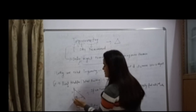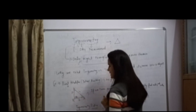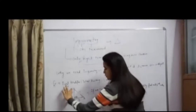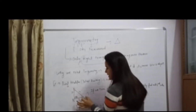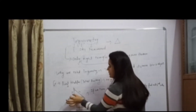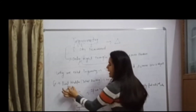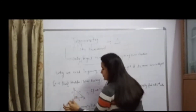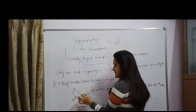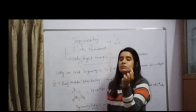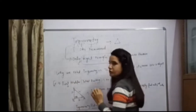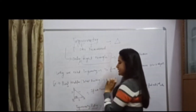The side in front of angle C is the base. If this is the Burj Khalifa building and you are standing here, then the distance between you and Burj Khalifa will be the base, and the height of Burj Khalifa will be the perpendicular. If you have to find out the distance between you and the top of Burj Khalifa, that will be the hypotenuse.